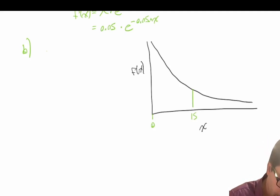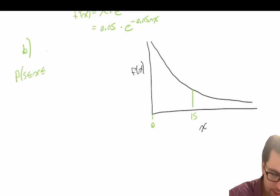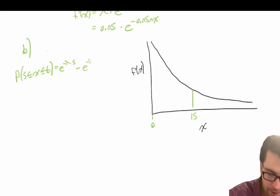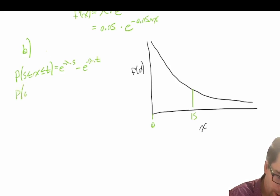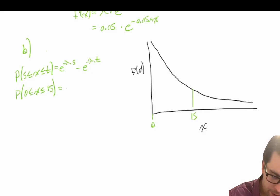We can write our cumulative probability function. The probability that s is less than or equal to x less than or equal to t equals e to the power of negative lambda times s, minus e to the power of negative lambda times t. In this case, we're asking the probability that 0 is less than or equal to x less than or equal to 15.